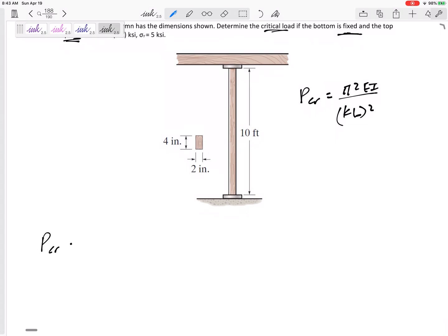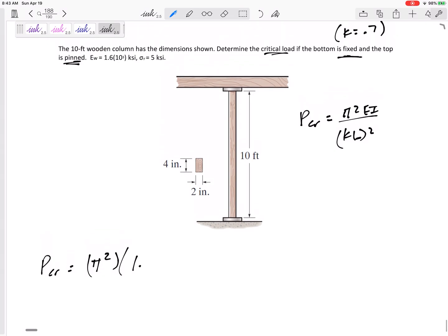So P critical would be pi squared. The E was given to us 1.6 times 10 to the 3 KSI. Be careful, I'm looking at my units here. Kips per square inch.